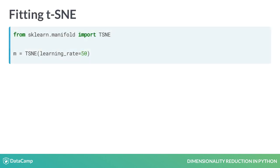We'll create a TSNE model with learning rate 50. While fitting to the dataset, TSNE will try different configurations and evaluate these with an internal cost function. High learning rates will cause the algorithm to be more adventurous in the configurations it tries out, while low learning rates will cause it to be more conservative. Usually, learning rates fall in the 10 to 1000 range.